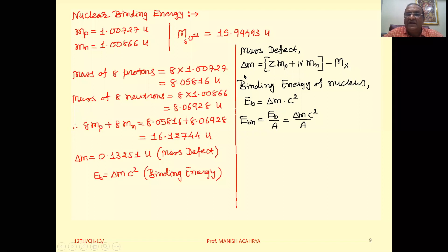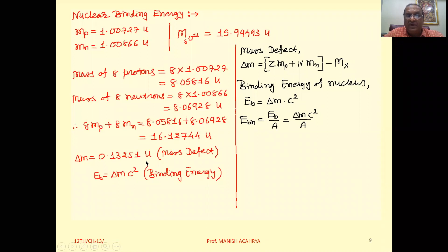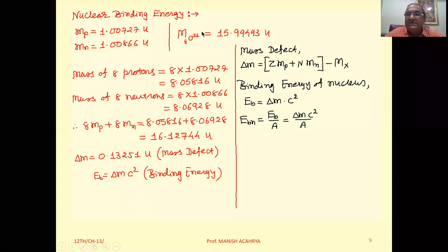The binding energy of the nucleus is given by delta-m × c². If this binding energy is divided by the atomic mass number, we get the binding energy per nucleon. The mass defect for oxygen is 0.13251 U. Since 1 U = 931.5 MeV, we multiply 0.13251 by 931.5 to get the binding energy of the oxygen nucleus in MeV.